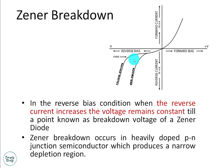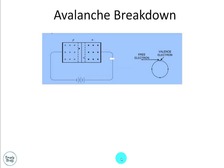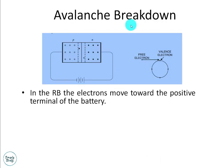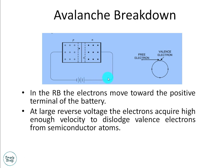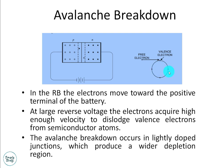Zener breakdown occurs in heavily doped PN junctions and hence they have a narrow depletion region. In avalanche breakdown, under reverse bias, electrons move towards the positive terminal of the battery. At large reverse voltages, electrons acquire high enough velocity to dislodge valence electrons from semiconductor atoms, causing a large number of electrons to flow in reverse bias and generating a large current. Avalanche breakdown occurs in lightly doped junctions which produce a wider depletion layer.